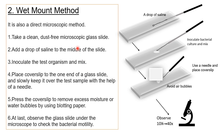The second microscopic method is wet mount, where we just need a plain clean glass slide — no depression slide is required. Take a clean dust-free microscopic glass slide, then add a drop of saline — distilled water and NSL solution — in the middle of the slide. Then inoculate the test organism: take a sterile loop, pick a well-isolated colony, and mix it properly into that drop of saline to make a bacterial suspension.